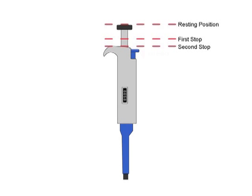The final moving part is the tip ejector. To remove the tip, push the tip ejector downwards.